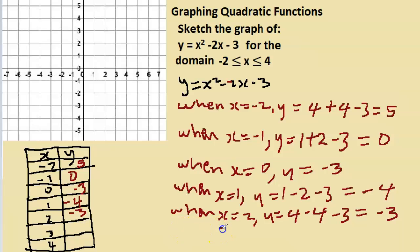When x = 3, y = x², that's 3², that's positive 9, and -2x, that's -2 times 3, -6, and -3. That equals 0.